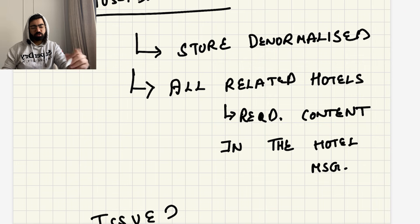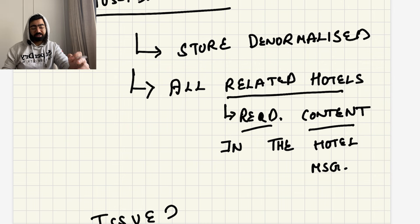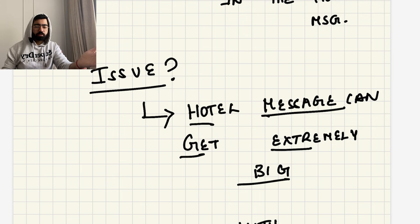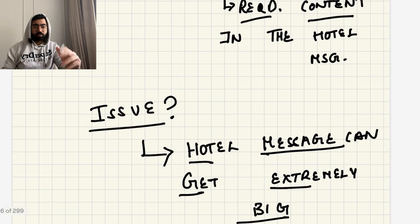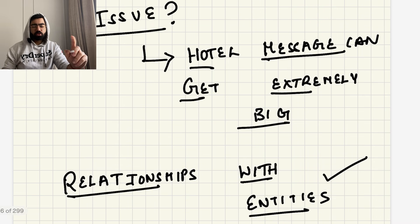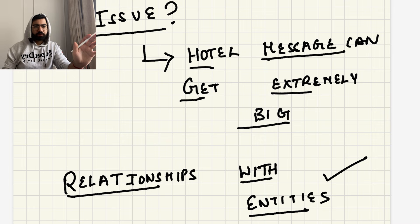One possible solution is to denormalize in NoSQL — storing all related hotels' images inside the same document. But the issue is that the JSON document can become extremely large given the number of hotels. This tells us there are relationships between entities, and whenever there are relationships between entities, you should always prefer a SQL database.